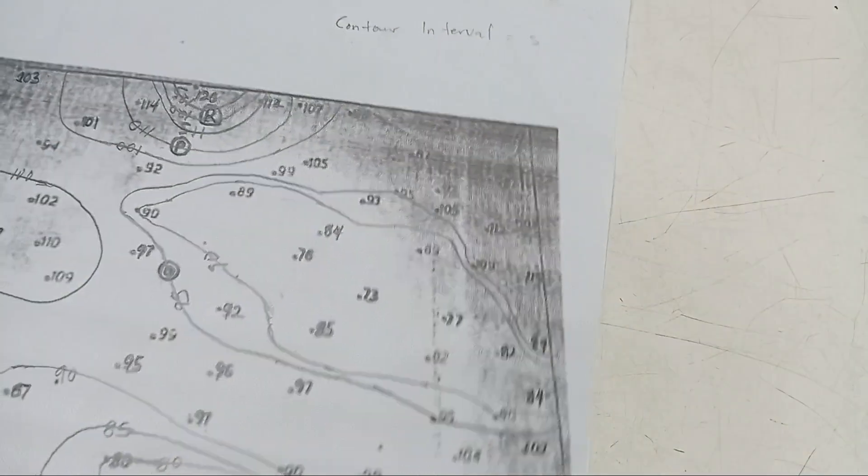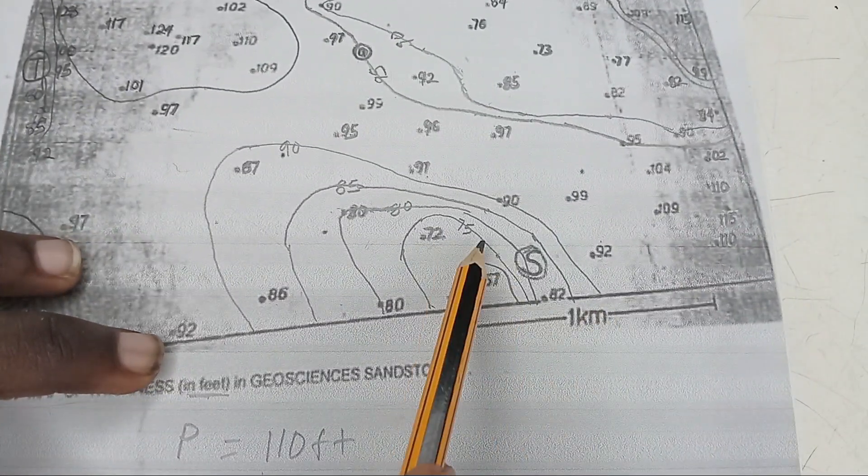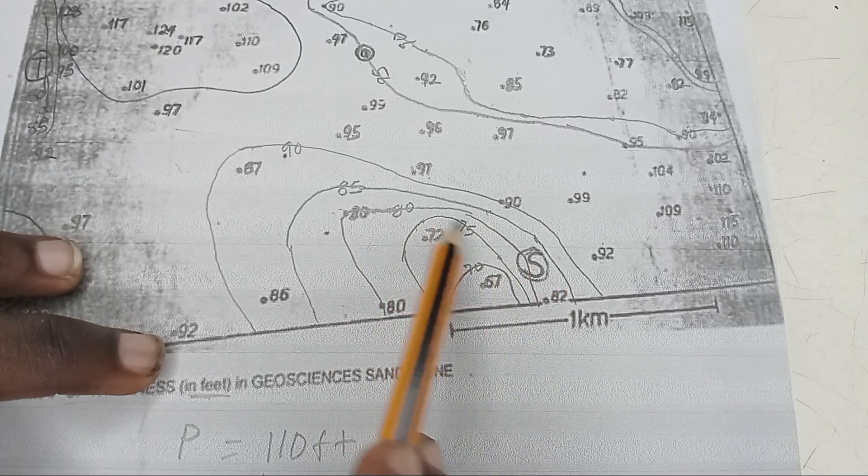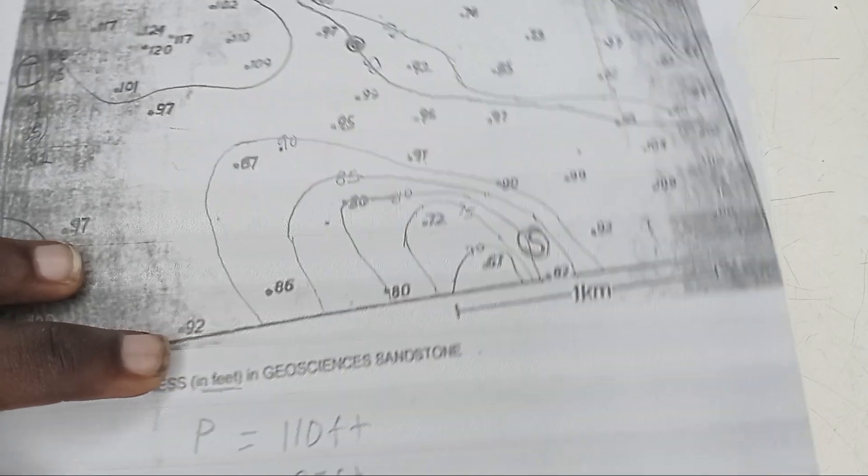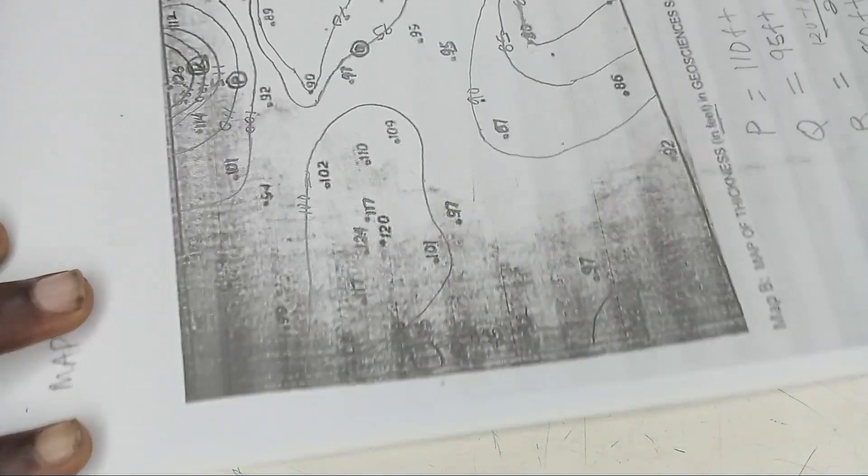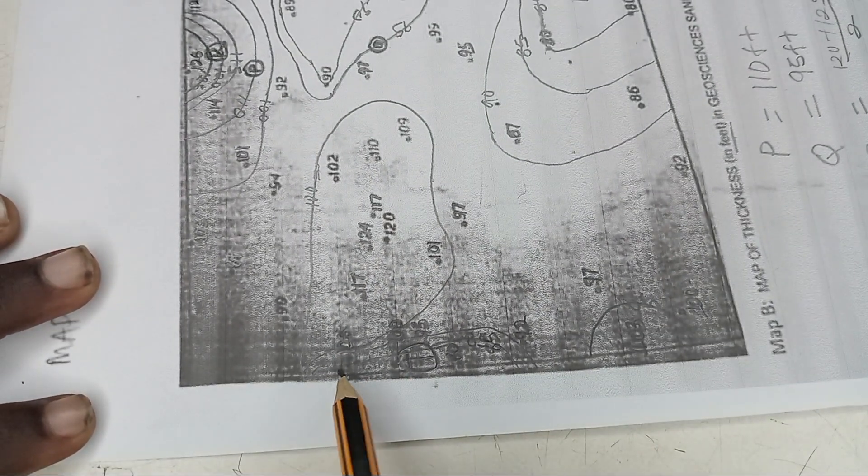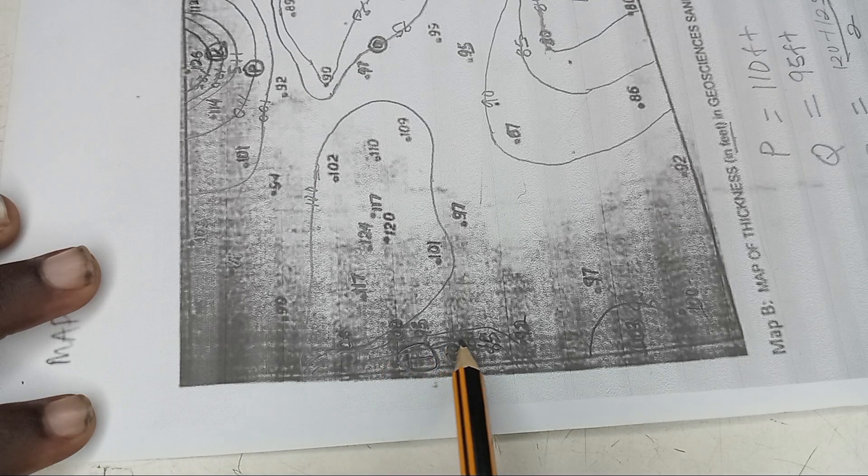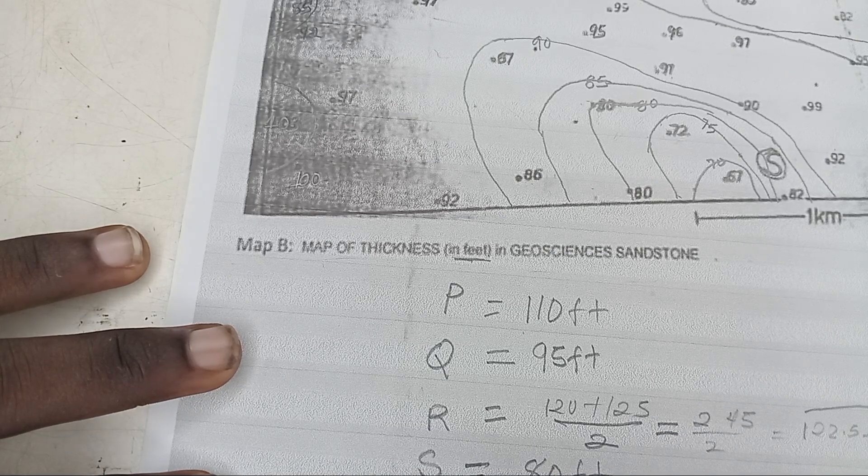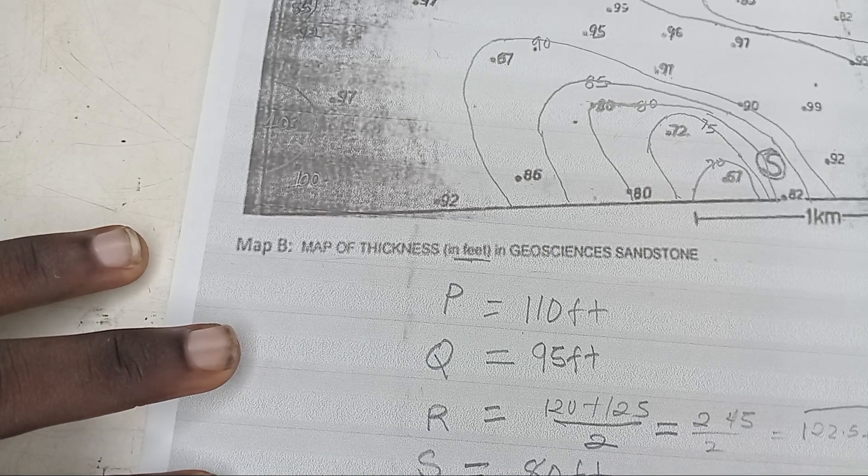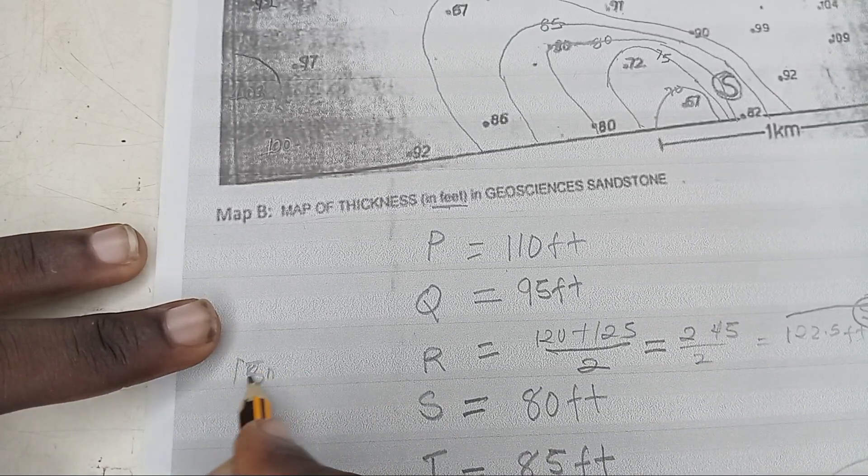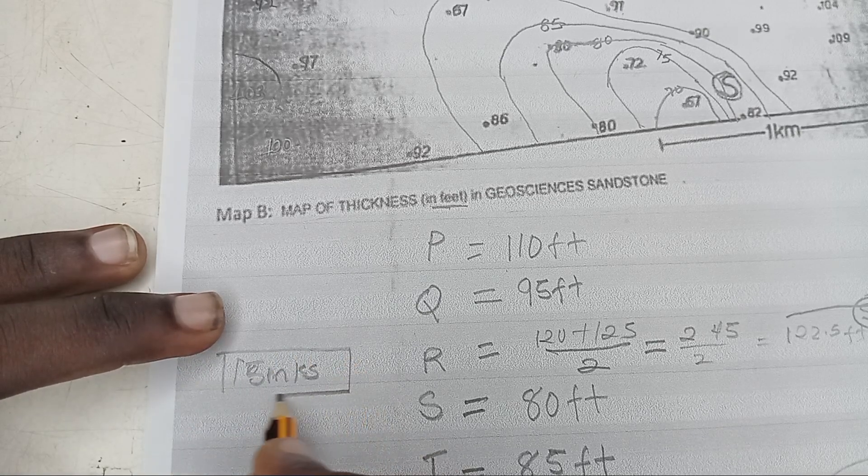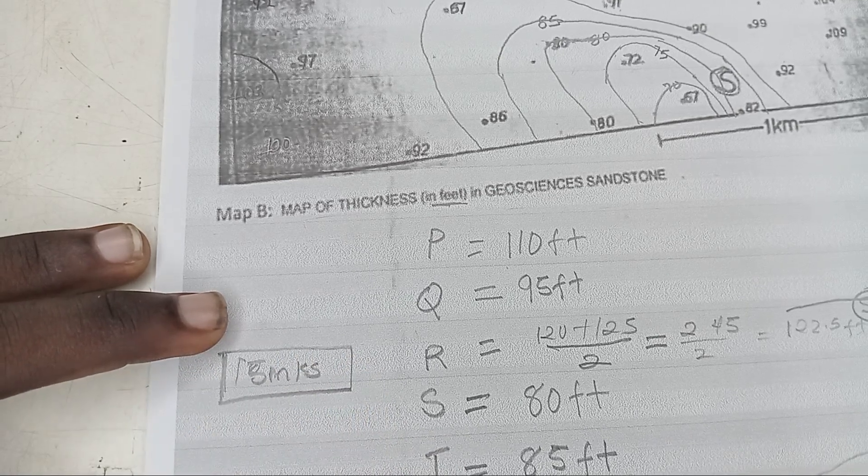Know that you did your contouring very well. So for your S, which means we are in the exam, you've already got a nine mark already. For the S part, just look at it. This S, what are the two things that are there? Only 80. 85 didn't cross it. So you just say 80 feet. Now for my T, the only thing that crossed this my contour is 85. So you see my T is 85 feet. That's your 12 or 15 marks. Thank you very much for watching. Can you subscribe to my channel?